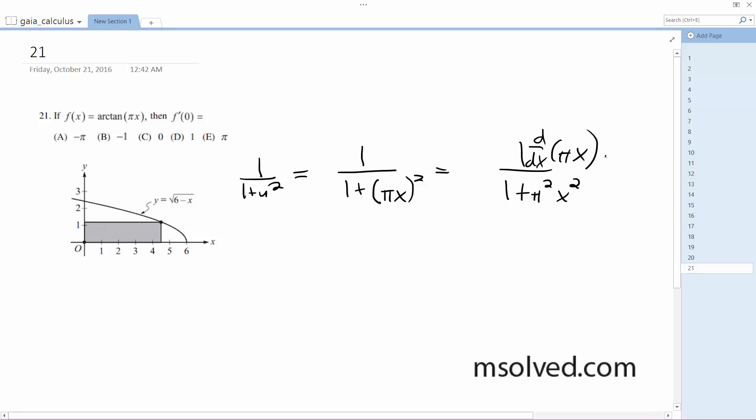And you just end up with pi on top. So what we have here for the derivative final is pi over 1 plus pi squared x squared.